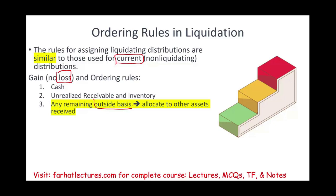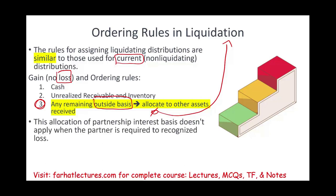Any remaining outside basis gets allocated to the other assets received in this step during the liquidating distribution. Why? Because we have to zero the basis — we are dealing with the liquidation. This is the step where liquidating and non-liquidating distributions differentiate. This allocation does not apply when the partner is required to recognize a loss, and we're going to look at that loss situation.